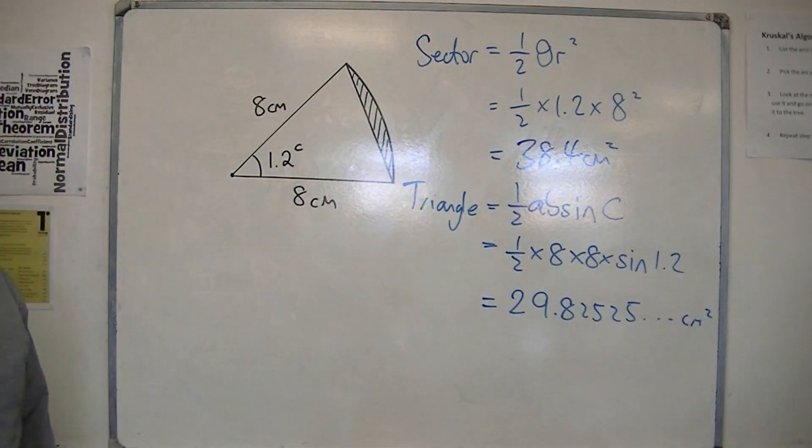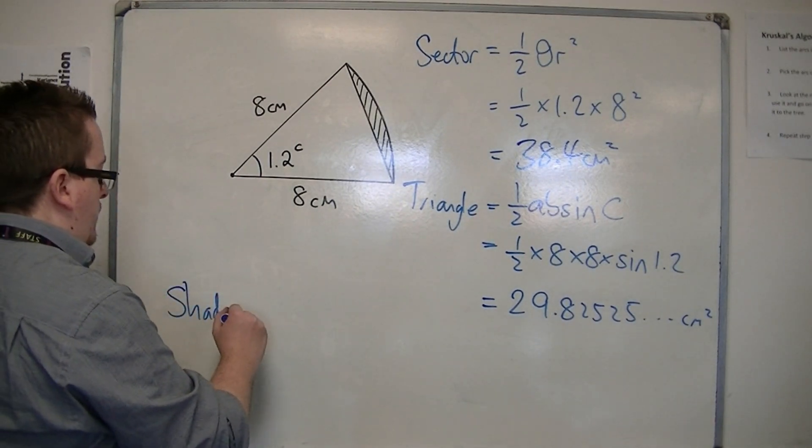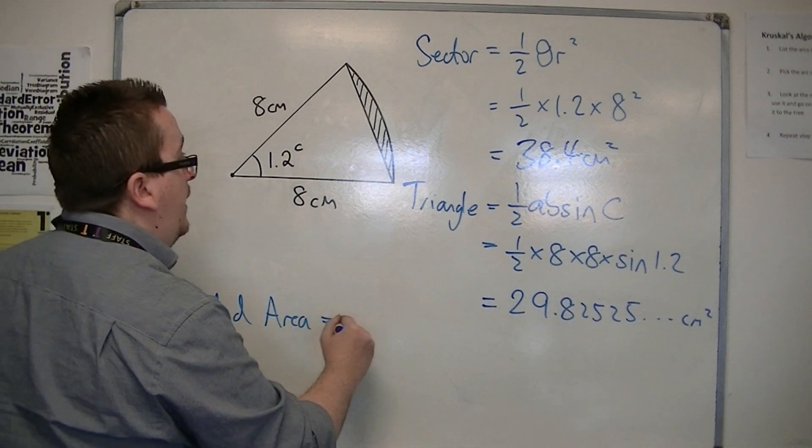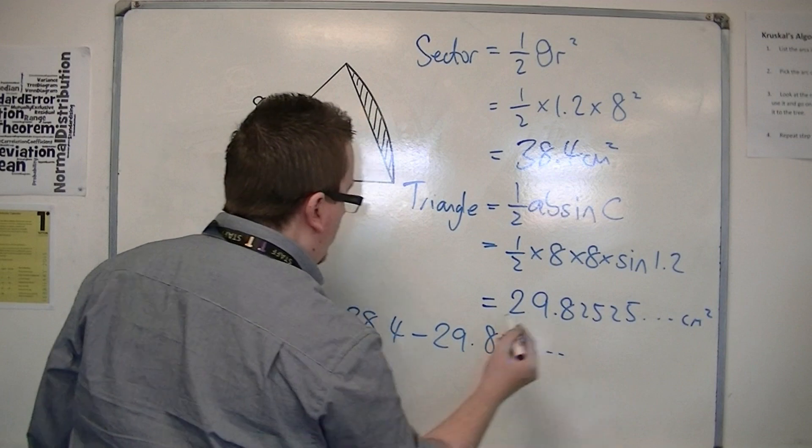So that's the area of the triangle. And so the shaded area is equal to 38.4 take away 29.825, etc.